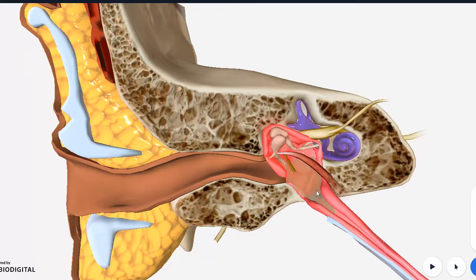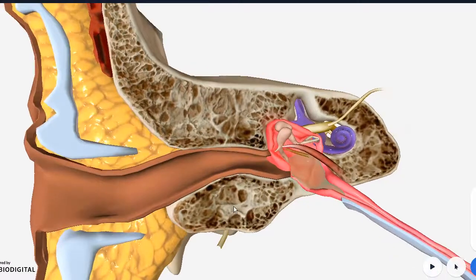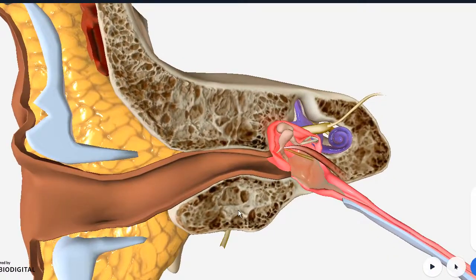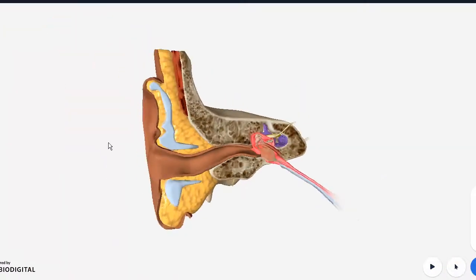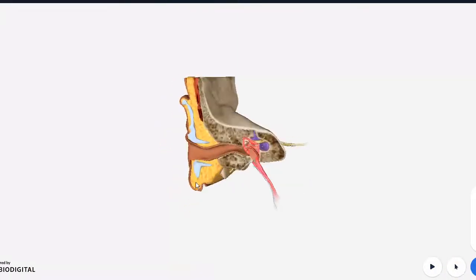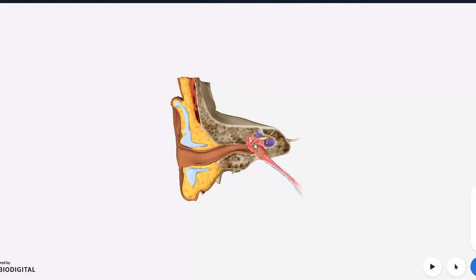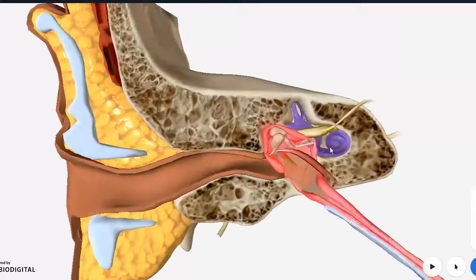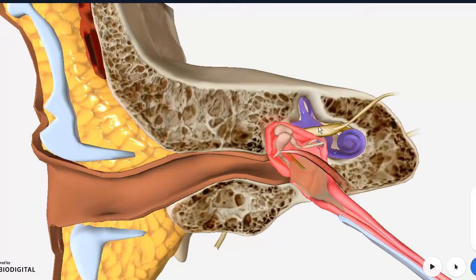Here in front of us we see a 3D model of the external ear, the middle ear cavity — also known as the tympanic cavity — and the internal ear.